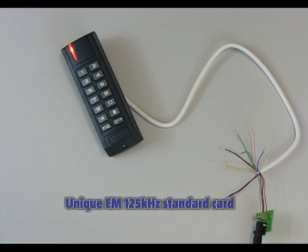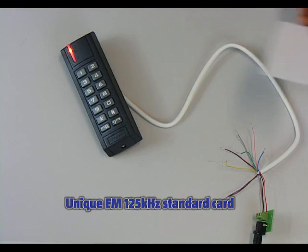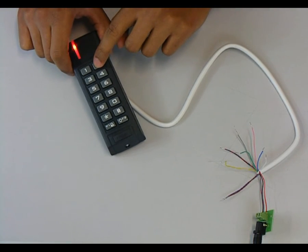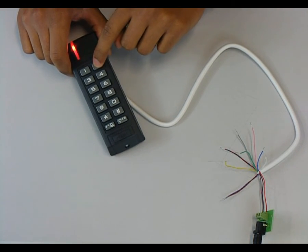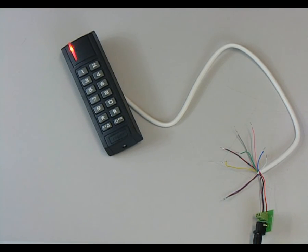Next present any unique EM standard card, which becomes a master user card. Then reader is expecting an implementation of installer pin code, followed by hash key, same as previous user, next present another card.